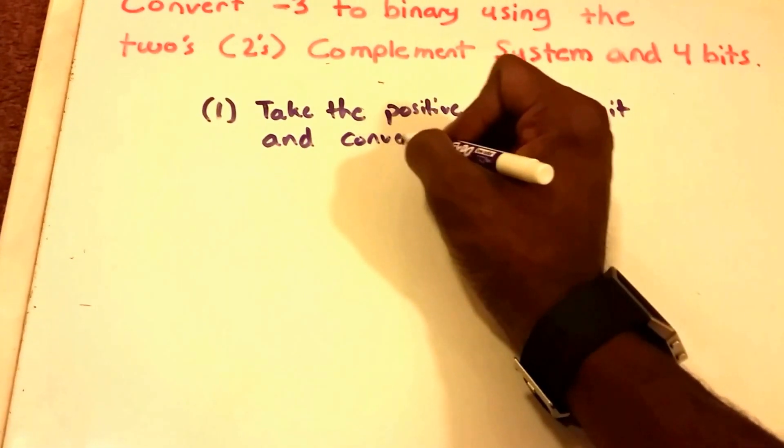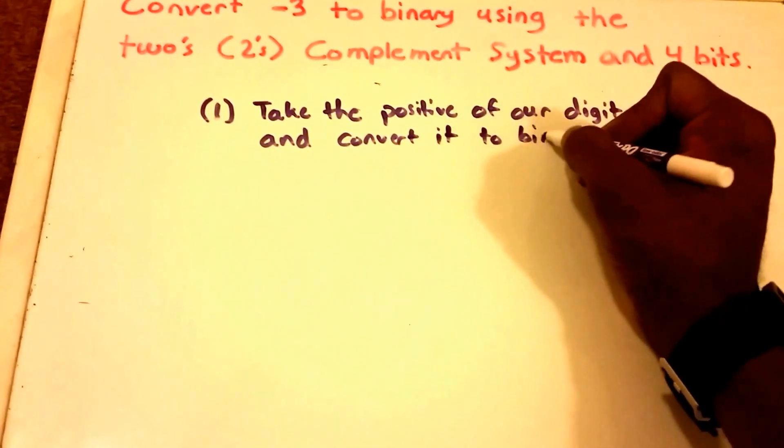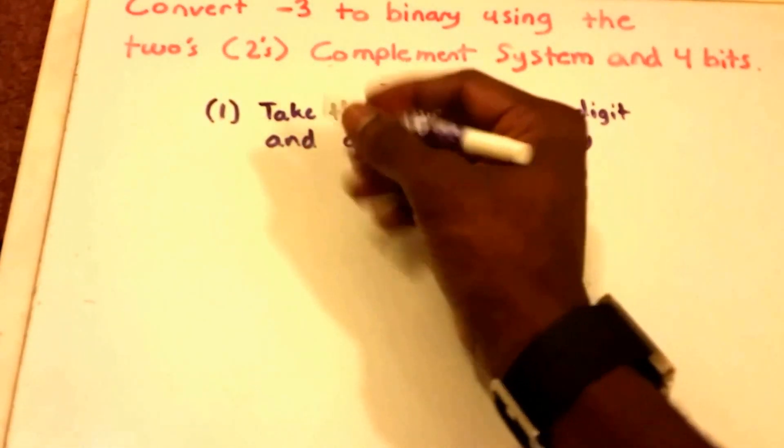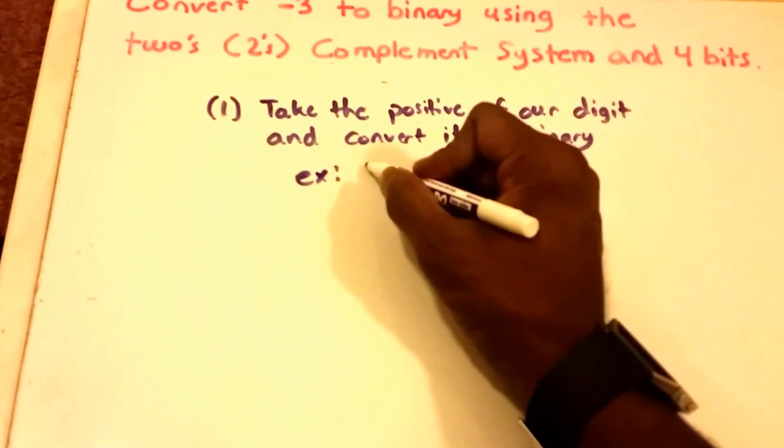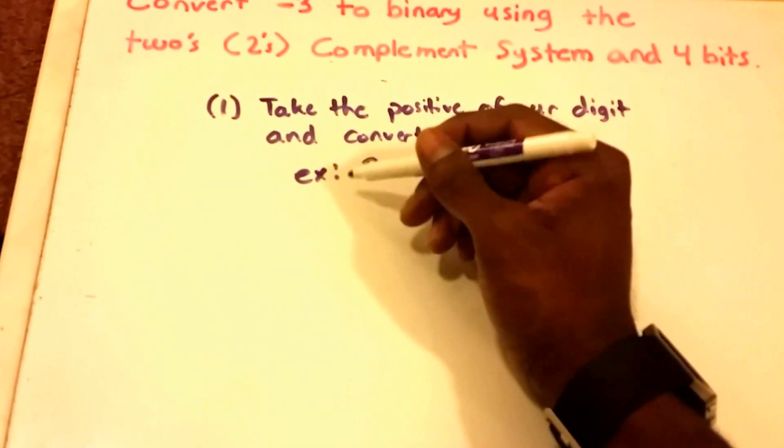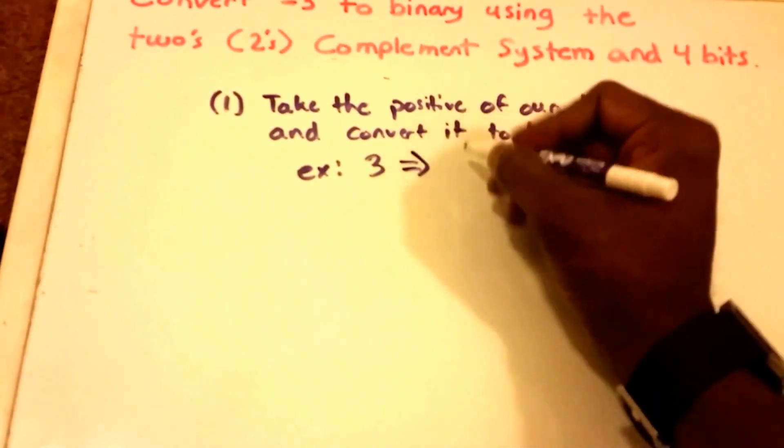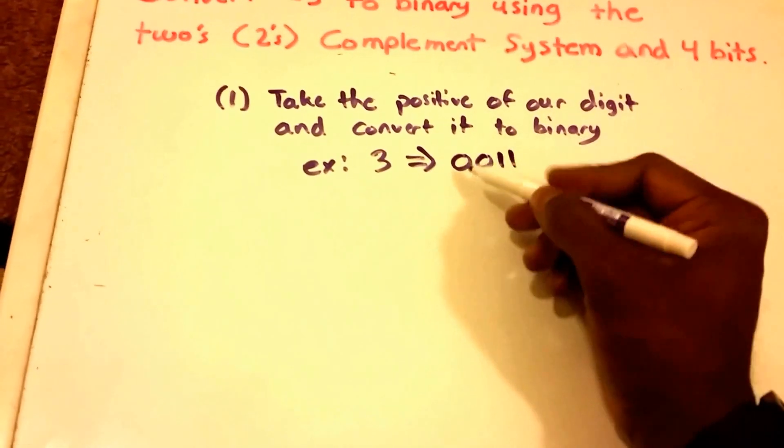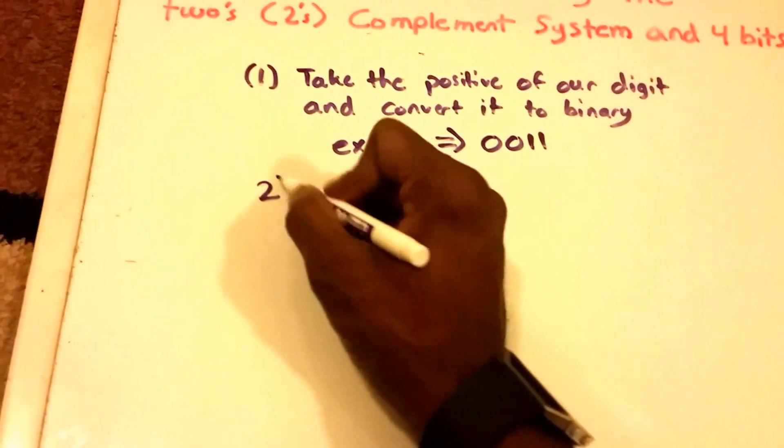So that's just taking the 3 here from our example. We're going to take the 3 because the positive of negative 3 is 3, and we're going to convert that to binary, which is 0011 because we're only using four bits here.